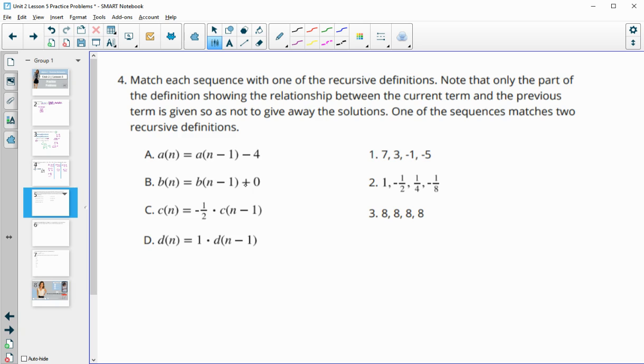This one says you're going to take the previous term plus 0. C says we're going to do negative 1 half times the previous term. And D says we're going to be multiplying the previous term times 1. And we know that when we add 0 to a term, it doesn't change it. Or when we multiply a term by 1, it doesn't change it. So both of these are going to go with option number 3, where it's staying as an 8, because then it's not changing.